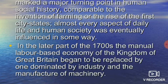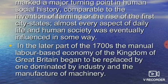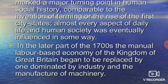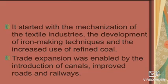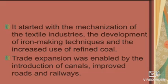Almost every aspect of daily life and human society was eventually influenced in some way. In the later part of the 1700s, the manual labor-based economy of the Kingdom of Great Britain began to be replaced by one dominated by industry and the manufacture of machinery. It started with the mechanization of the textile industries, the development of iron-making techniques, and the increased use of refined coal. The north-eastern side of England has a rich deposit of iron ore, which also helped in the development of industries. Trade expansion was enabled by the introduction of canals, improved roads, and railways.